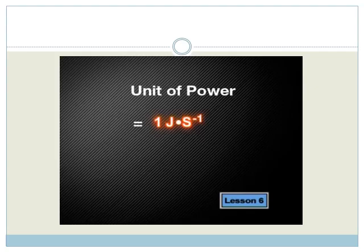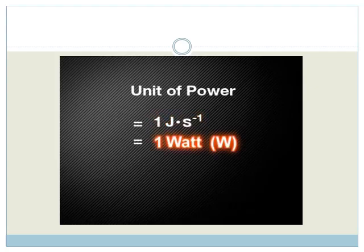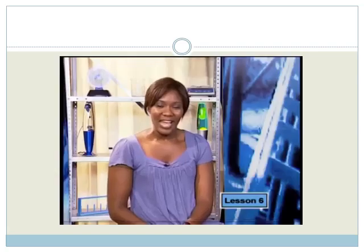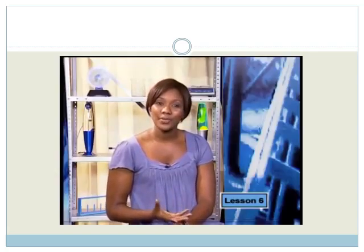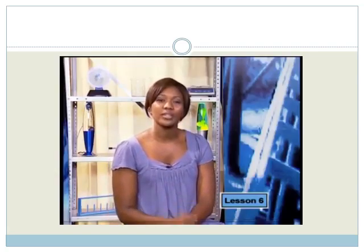So power must be measured in joule per second. In SI units, this combination is called watt. The power of 1 watt means that work is being done at the rate of 1 joule per second.